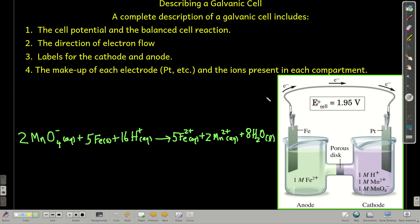When you're asked to describe a galvanic cell, make sure it includes all these parts: the cell potential, in this one it's 1.95 volts, the balanced cell reaction, that's this right here, the redox reaction, the direction of electron flow going from anode to cathode, labeling the anode and the cathode, and what's in each of these electrodes and the compartments. So all of that has to be in a complete description of a galvanic cell.